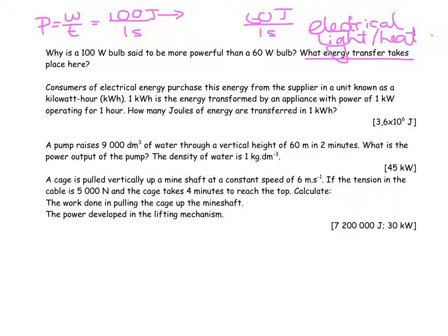Consumers of electrical energy purchase this energy from the supplier in a unit known as a kilowatt hour. So all the kilowatts you use every hour just get added together. The energy transformation in an appliance with power of one kilowatt operating for one hour gives you one kilowatt hour. How many joules are there in one kilowatt hour?